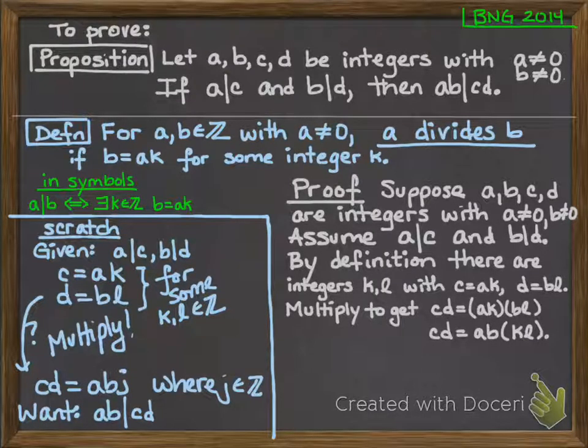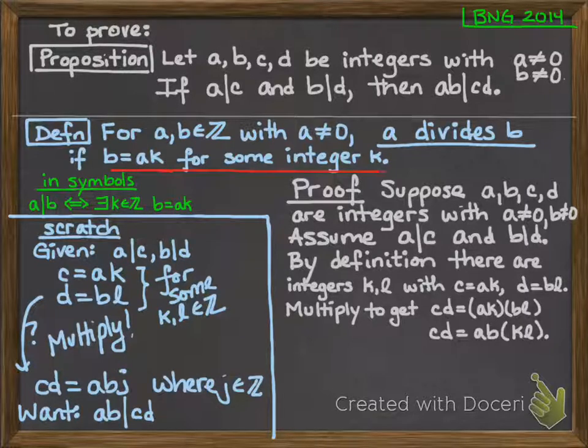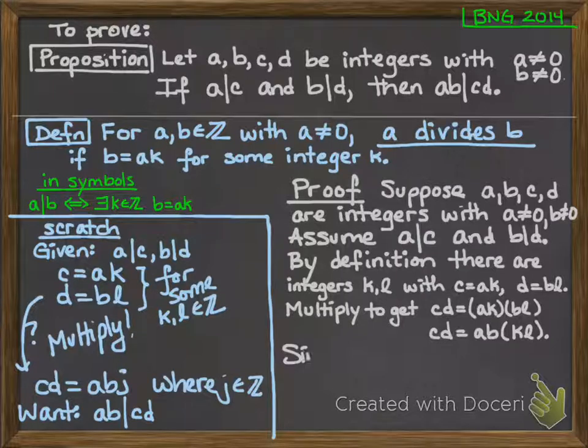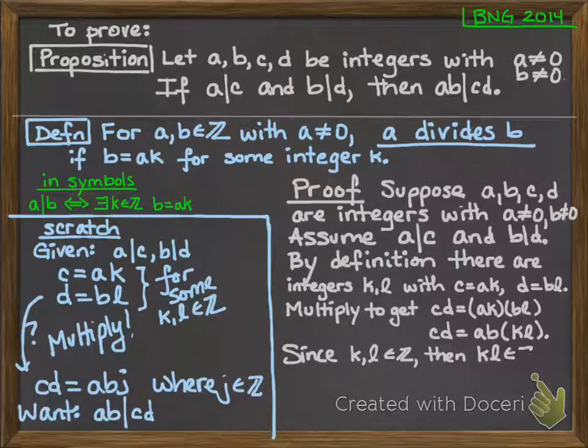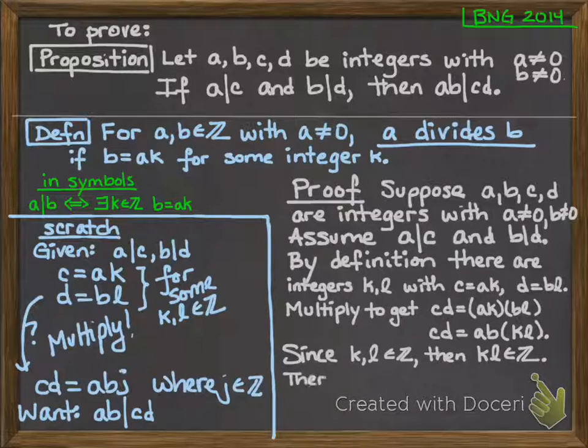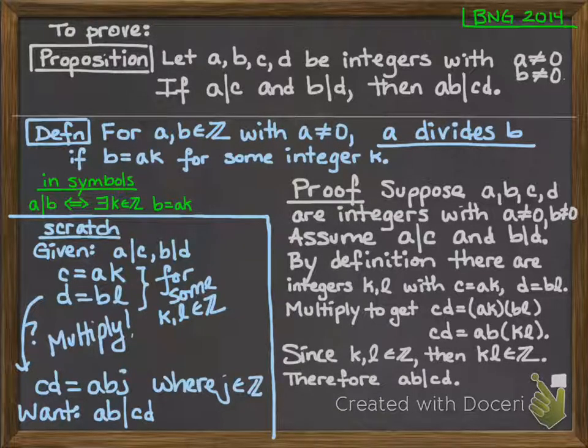Now I almost have here the definition that says that ab divides cd. I have cd is ab times something. Now the definition says that I have to have b is equal to a times something. But in particular, the something, the k here, has to be an integer. So down here in this example, is k times l an integer? Well, a moment's thought will tell me that it is, so I just need to say that in my proof. Since k and l are integers, then kl is an integer. Now I have everything I need to finish off my definition. Therefore, ab divides cd. And that's the end of my proof.